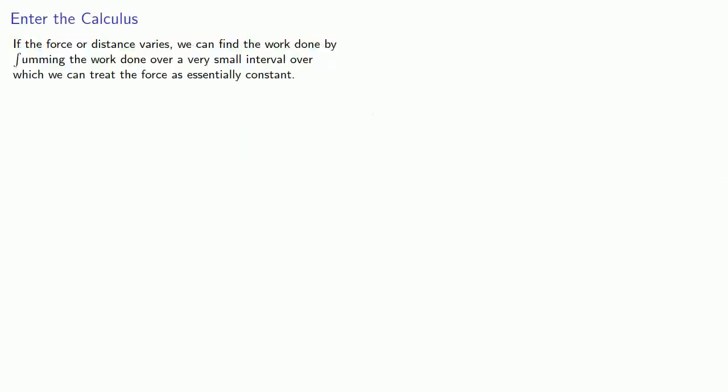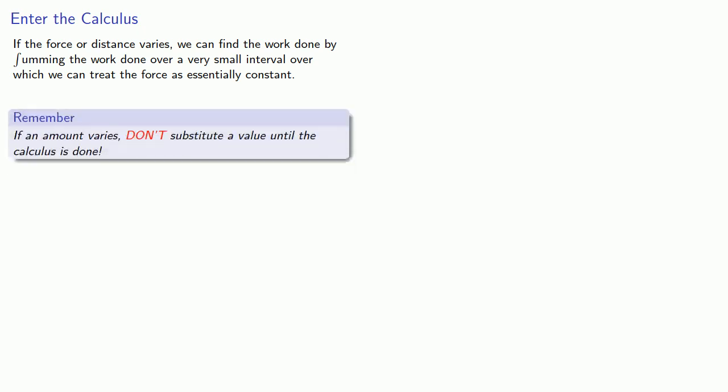If the force or distance varies, we can find the work done by summing the work done over a very small interval, over which we can treat the force as essentially constant. And so one important idea to keep in mind is that if an amount varies, don't substitute a value until the calculus is done.